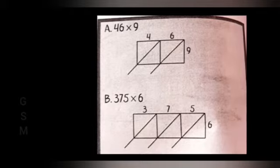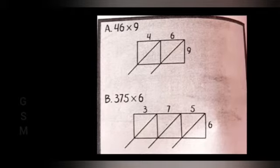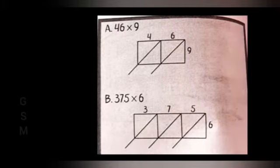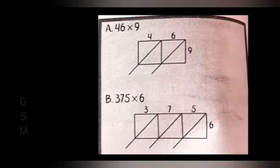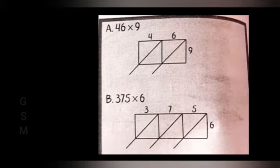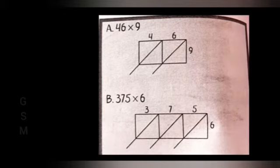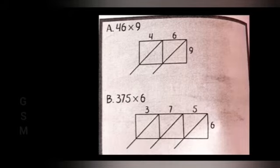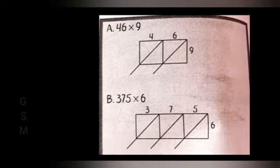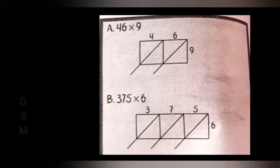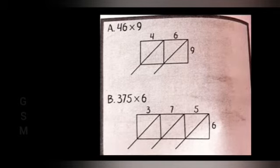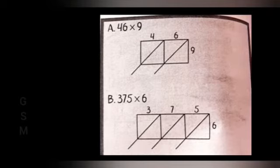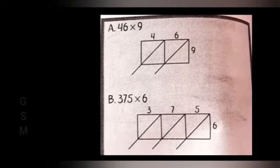We then added the digits in the diagonals starting from the right. The sum along the first diagonal was 4, and along the second was 11, that is 6 plus 5. So we regrouped 11 as 1 ten and 1 one and carried over 1 ten to the diagonal on the left. The sum of the last diagonal was 4, so 3 plus 1. So the answer was 414.